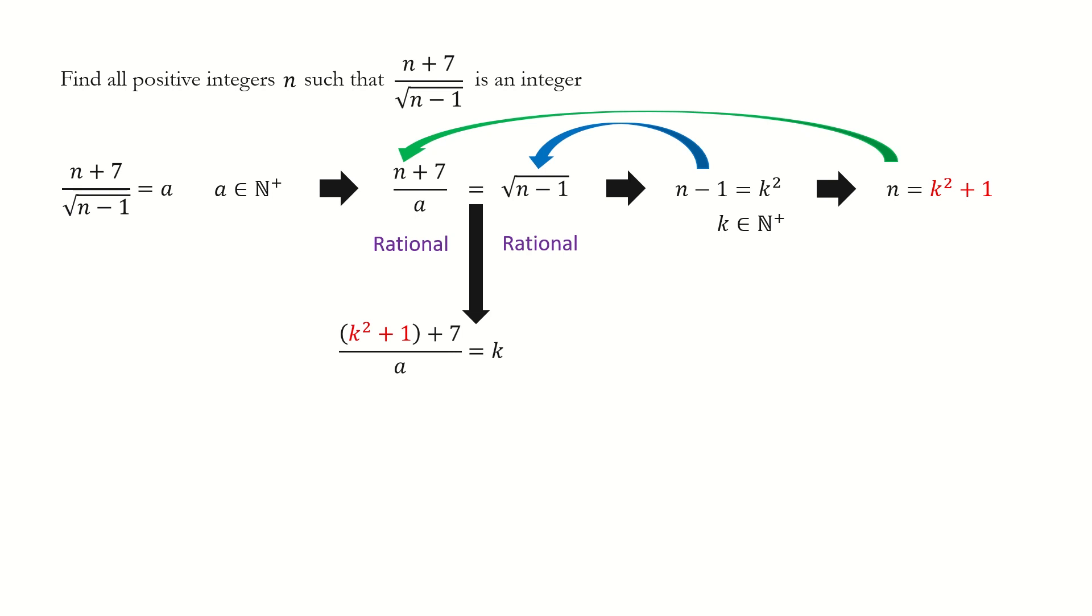Then we plug this back into our equation. We simplify the numerator and switch the position for a and k. Then we write the left-hand side into this form.